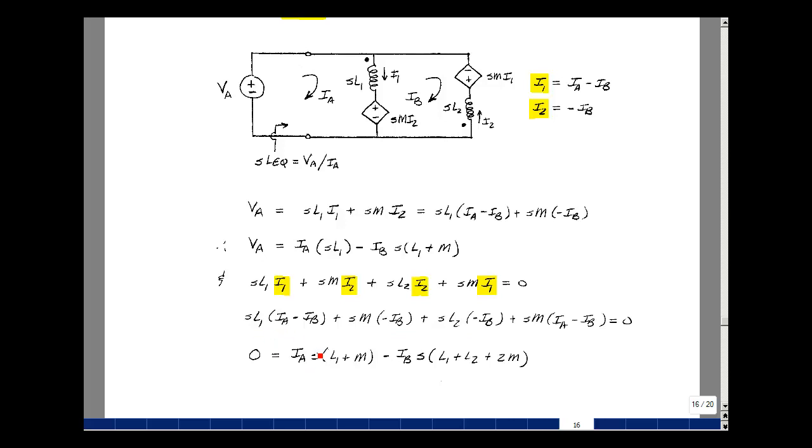Let's group all the things that multiply I sub A and I sub B. So here's I sub A, it's SL1. We also have a value here for times I sub A, which is S times M. And things that multiply I sub B always have a minus sign with it. So this first term here is our SL1. Here's SL2. And then I've got SM twice that multiplies I sub B, so I get a 2M times S and then a minus I sub B.